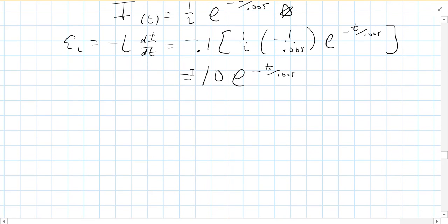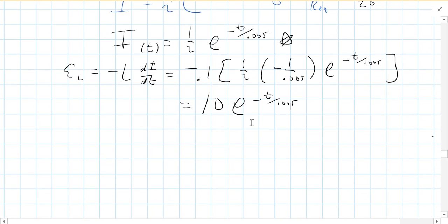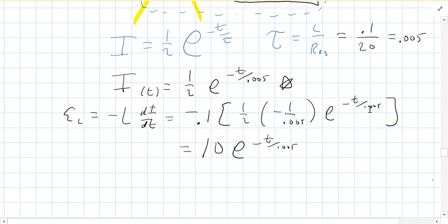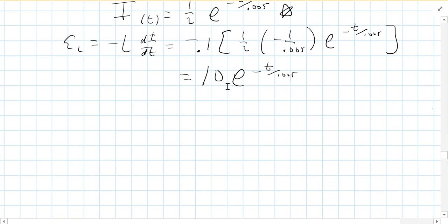Finally, the other way to get this is to say, well, this inductor has to push half an amp through 20 ohms. How many volts does that take? Well, V equals IR. Half an amp times 20 ohms is 10 volts. So that's the other way to get this 10 out front here is to just know it's I times R.